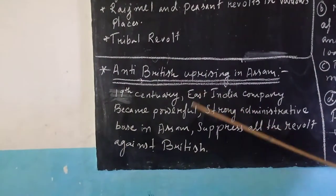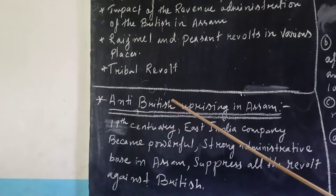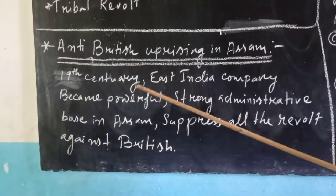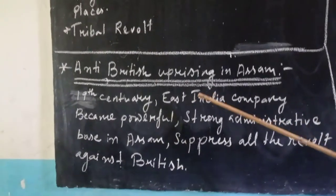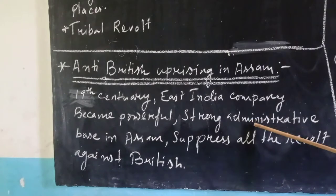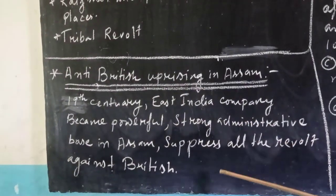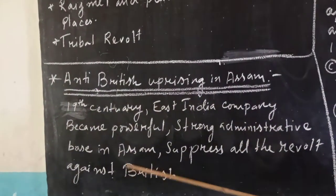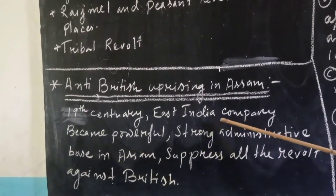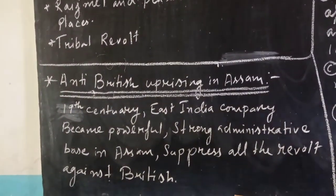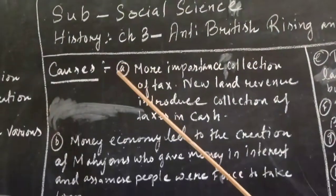Now let us go to the chapter. First we will study about anti-British uprising — what were the reasons behind people of Assam rising against the British. Before going to the 19th century, from then onwards it started. In the 19th century, the East India Company in India became very powerful, and strong administration also started in Assam. Those who revolted against the British were suppressed, as they were powerful rulers there.